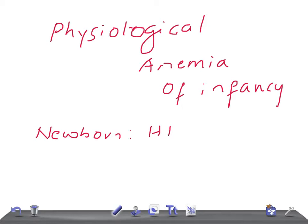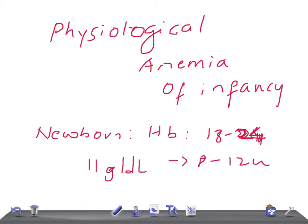When a newborn is born, the hemoglobin is around 18 to 24 g/dL. After that, from day to day compared to the previous day, it starts decreasing until around the third week, when it comes to a level of 11 g/dL. This occurs around 8 to 12 weeks — near two to three months — and the hemoglobin percentage will be around 11, which is why we call it anemia.